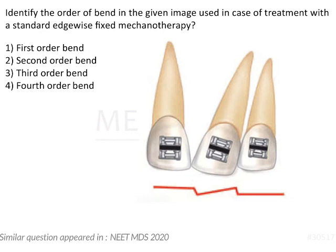In this image we see a distally inclined or distally tipped tooth. There is an arch wire here which has a bend in it. If you place this arch wire into the tooth, it will touch in two places, bringing about an upward movement on one side and a downward movement on the other side.